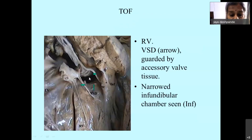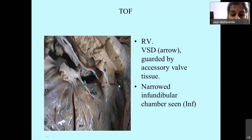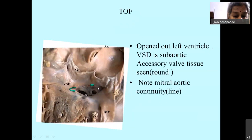Here is a VSD with accessory valve tissue which could produce some obstruction; this is the deviated infundibular septum and the narrowed infundibular chamber. This is the left ventricular aspect of a case of Fallot. Here is the VSD — it is a sub-aortic VSD; there is mitral-aortic continuity, and here you can see accessory valve tissue between the aortic and tricuspid valves.